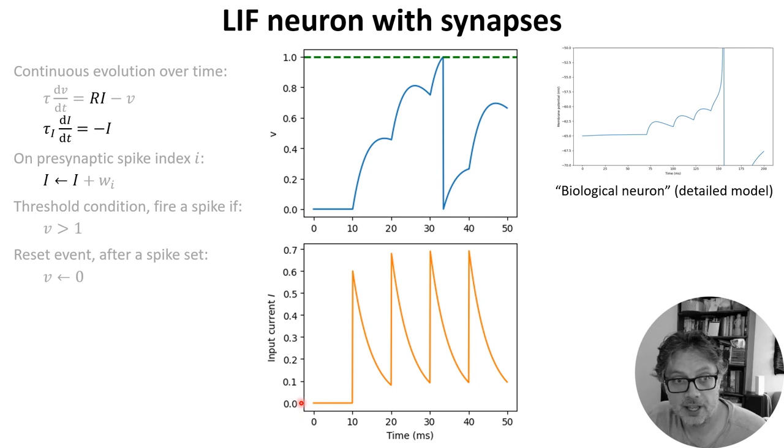So you can see on the bottom plot here that the input current is now behaving like the membrane potential before with this exponential shape. And you can think of that as a model of the internal processes of the synapses, and we'll talk more about that next week. For the moment,